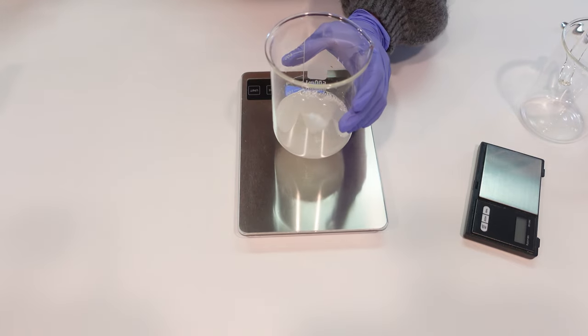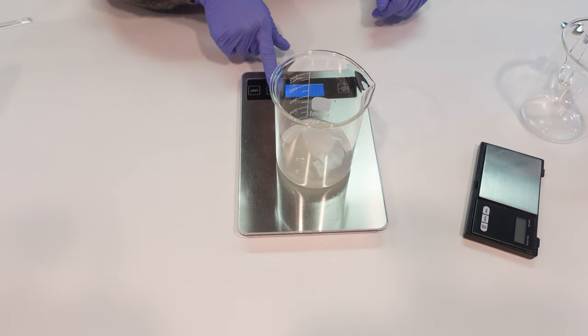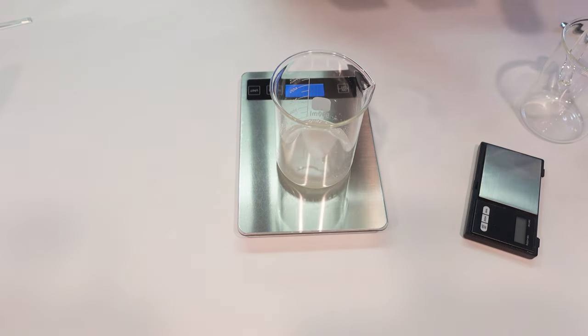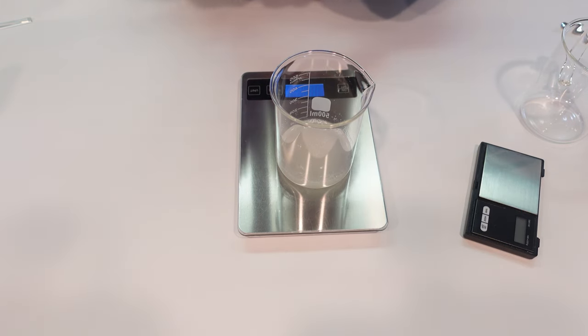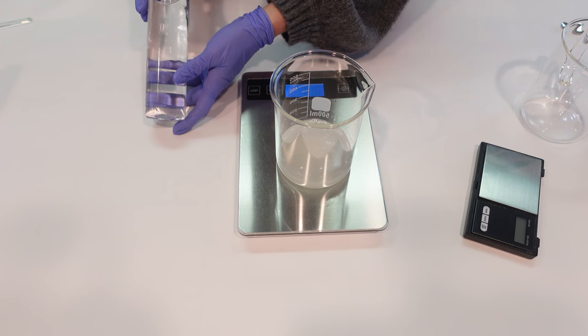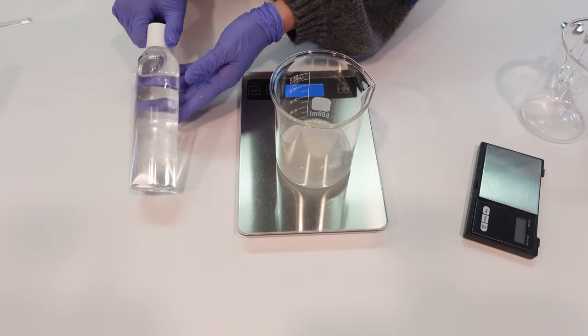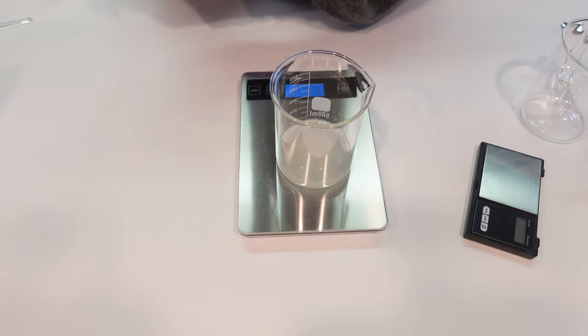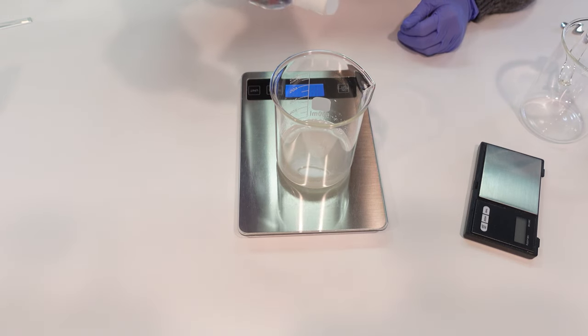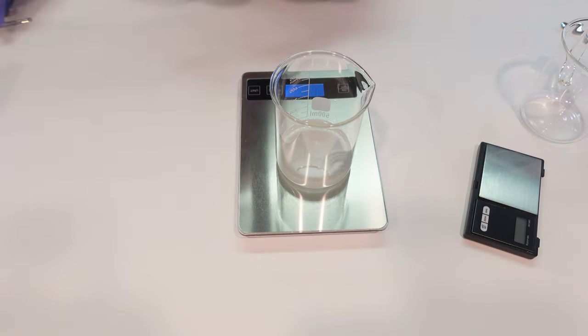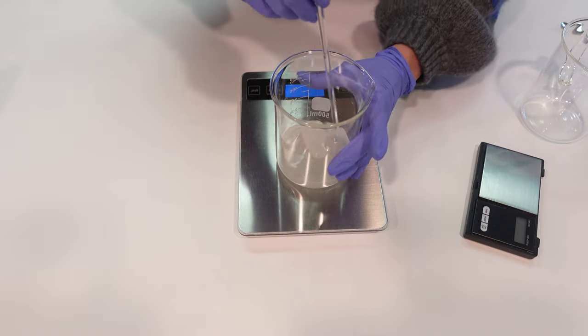The last thing we're going to add to our water phase beaker is some glycerin. We're using a fair amount of glycerin in this formula. Again, this is another humectant that is going to help draw and lock moisture into your skin. Then we're going to give that a good stir and set that aside.